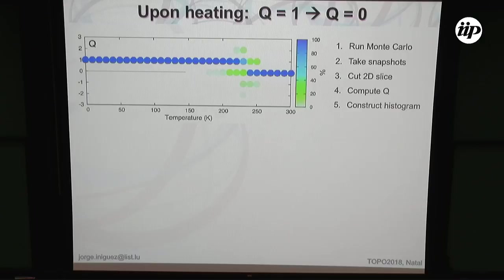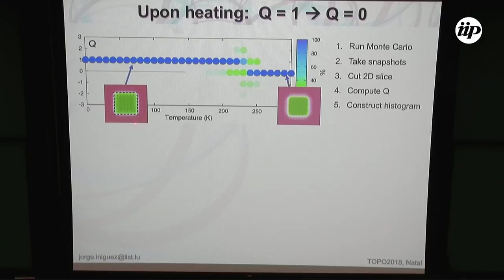At low temperatures, everything is at Q equal one — everything looks as shown before. At high temperatures, the domain wall loses this order. This is very similar to what I showed before: in bulk, we obtain a transition confined to the domain wall. Here we have the same kind of transition, and in the middle we have some sort of phase transition where we have a spread over different Q values.